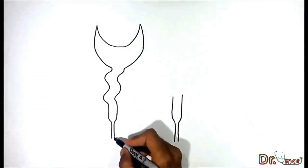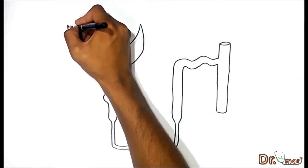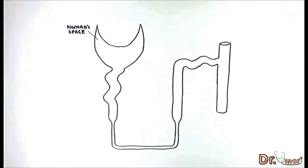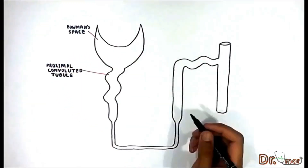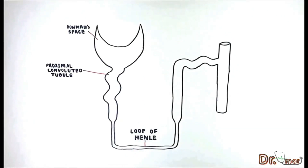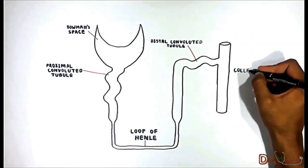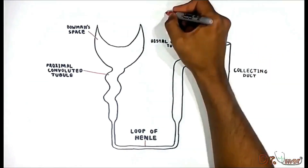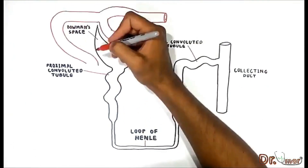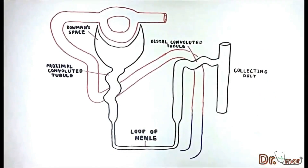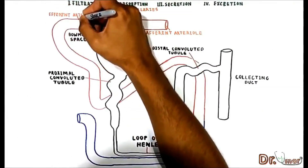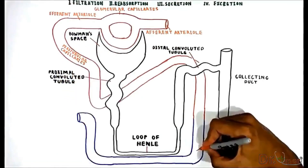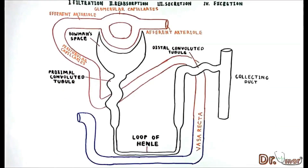Let me draw a nephron here again to explain all of them. Here is the Bowman's space, proximal convoluted tubule, loop of Henle, distal convoluted tubule, and collecting ducts. Talking about the nephron vasculature, here is the afferent arteriole, glomerular capillaries, efferent arteriole, and peritubular capillaries which adjoin the vasa recta.